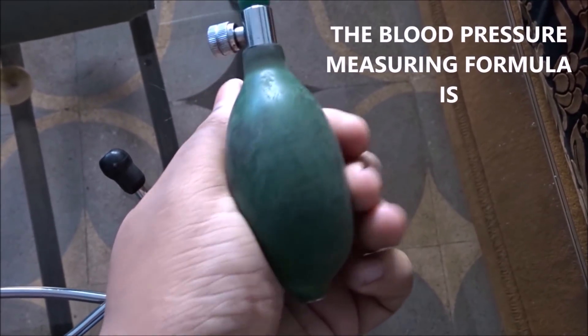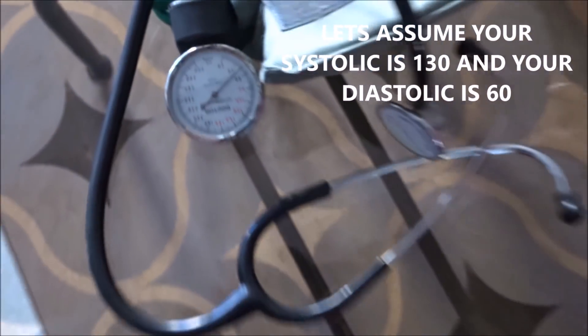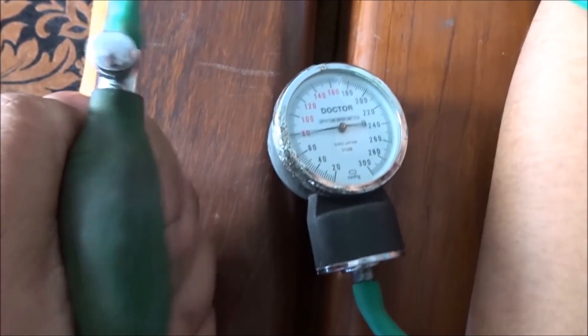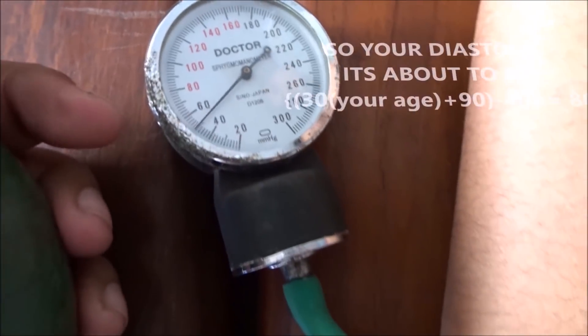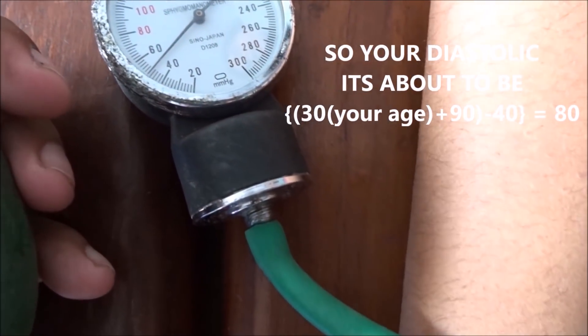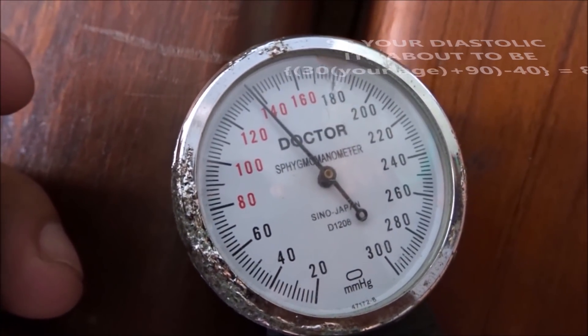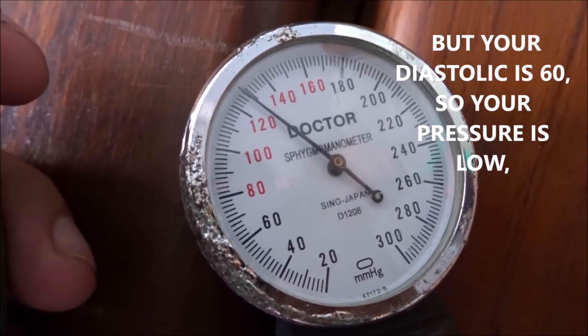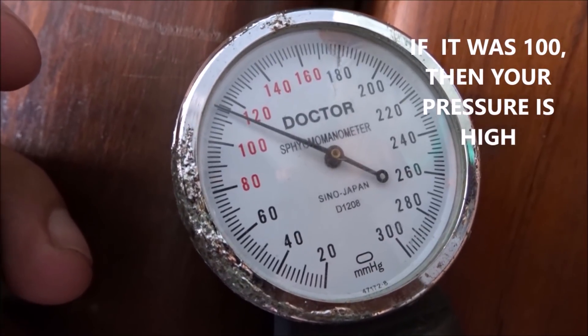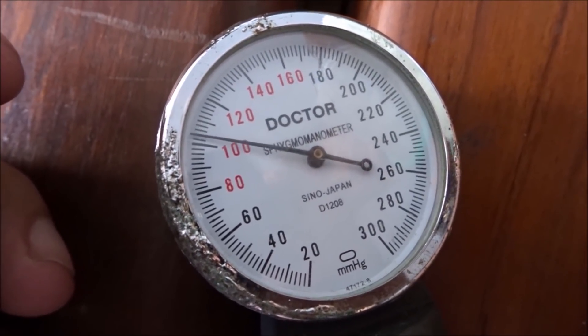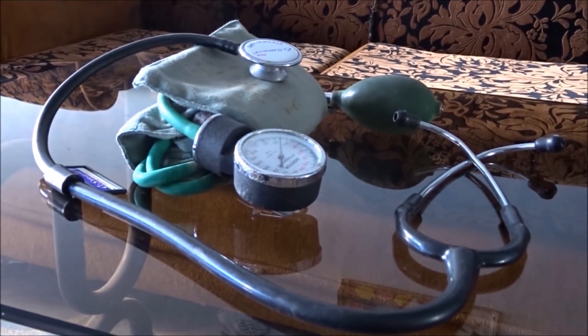The pressure measuring formula is, let's assume your systolic is 130 and your diastolic is 60. The formula is: your age is 30, so your diastolic is about to be 30 that's your age plus 90 minus 40 equal to 80, but your diastolic is 60, so your pressure is low. If it was 100, then your pressure is high. Sphygmomanometer is very important for our life, so keep this machine in all of your homes.